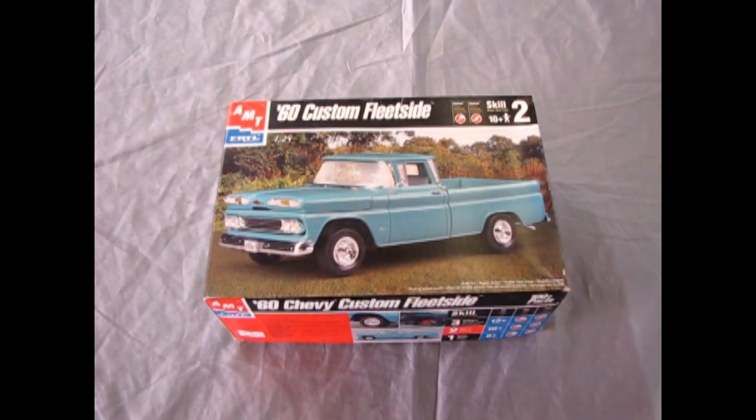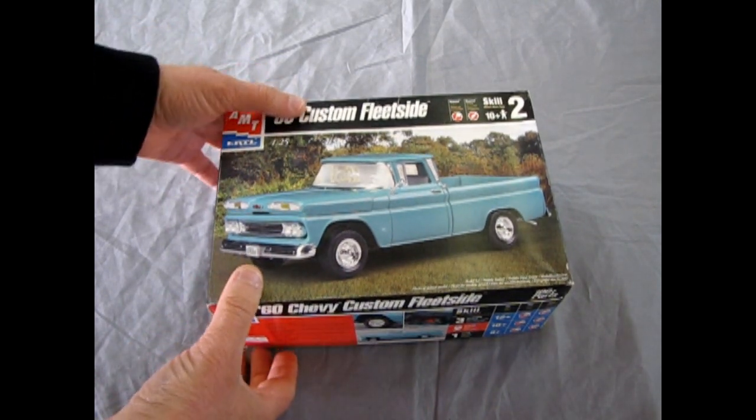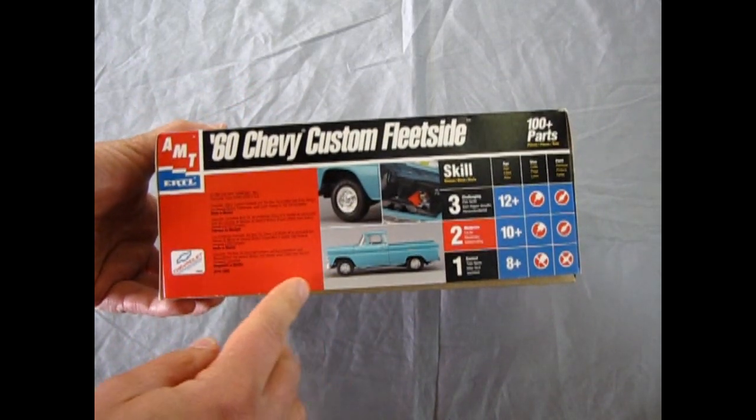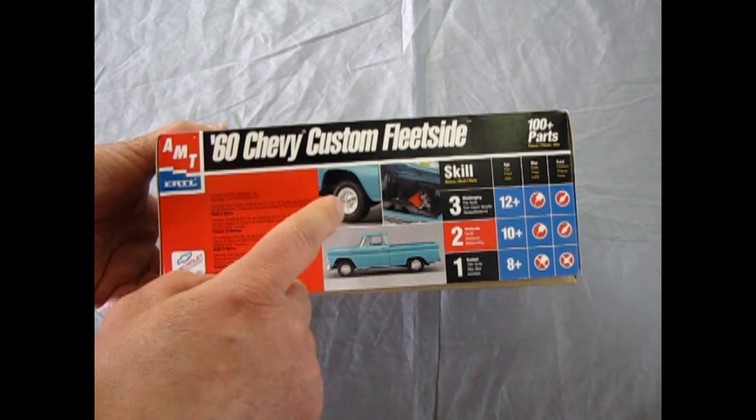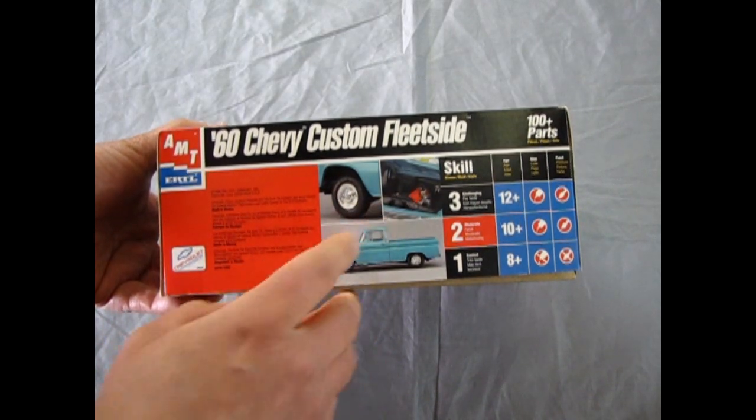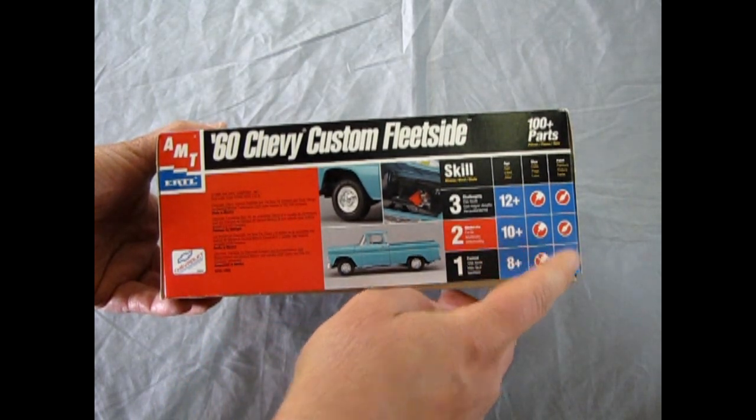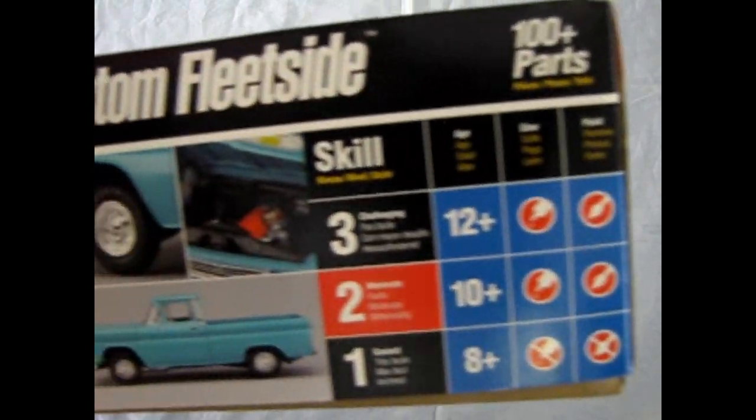Now we step back in time again to 1960 with this amazing Chevy Custom Fleet Side by AMT. This model kit came into production in 1998. We have some little features here. This is still under the RC2 label. They show a nice wheel and wheel arch, the Chevy Straight 6 under here and a side profile of this vehicle. It is a skill level 2 for ages 10 and up. Glue and paint is required. And look, 100 parts in this amazing model. Really cool.